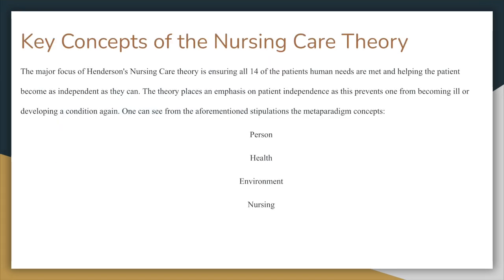What are the key concepts of the nursing care theory? The major focus in this theory is ensuring that all 14 of the patient's human needs are met in helping the patient become as independent as they can. There is an emphasis placed on the patient's independence as this prevents one from becoming ill again or developing a condition again.